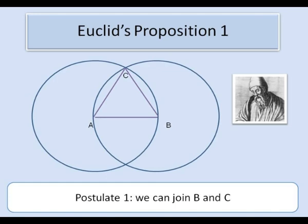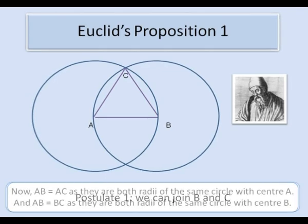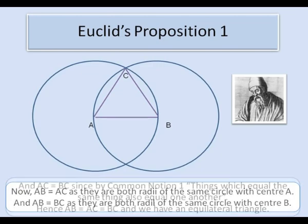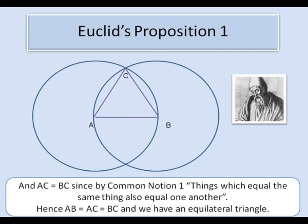So we have this configuration and because AB and AC are both radii of the same circle, they are the same length. Similarly, BC and AB are radii of the other circle, so they are the same length. And by the common notion that things which equal the same thing equal one another, we see that all three sides of the triangle are equal. So we have created the required equilateral triangle on AB.